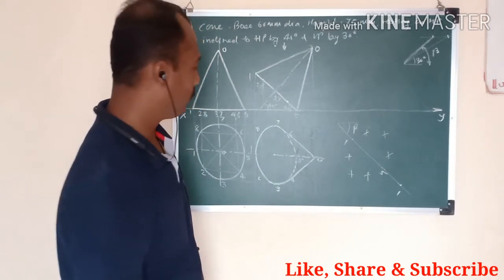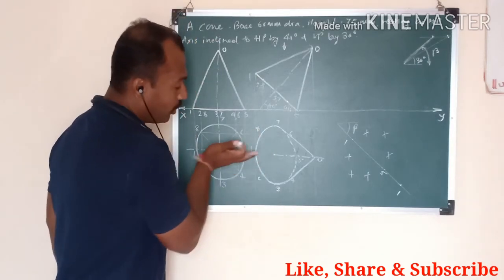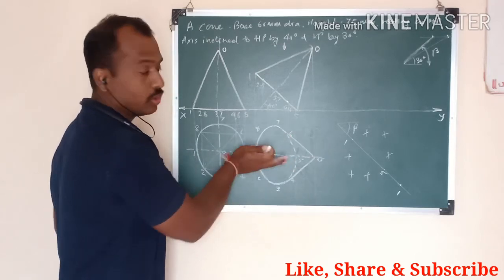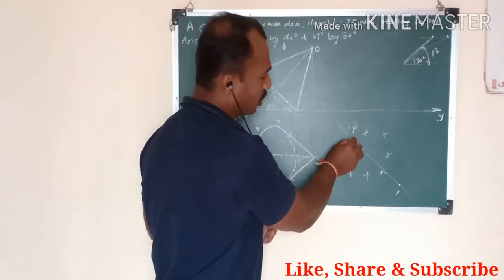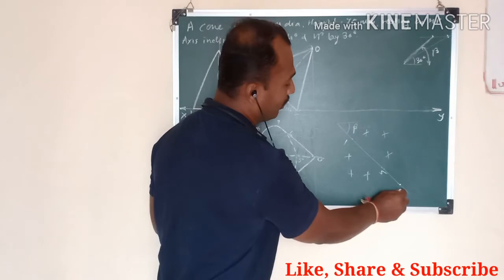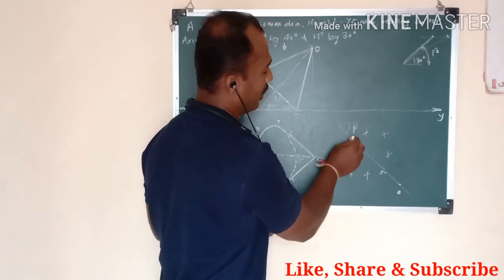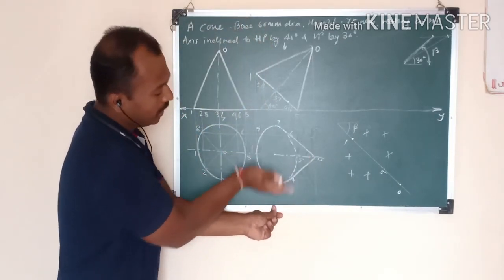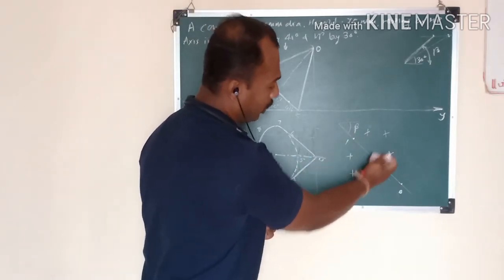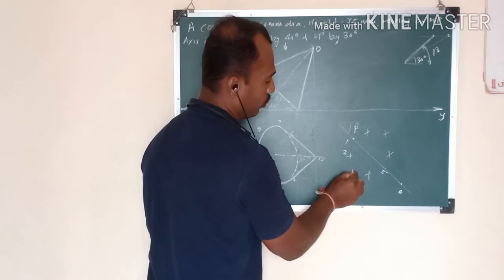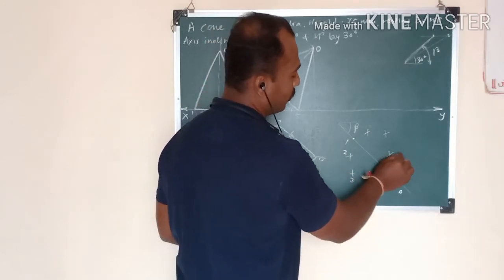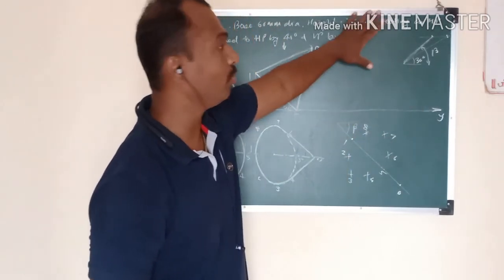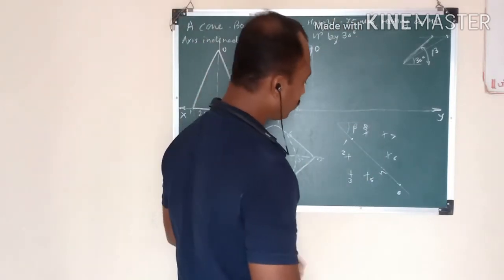Now assign point names carefully. Looking from point 1 towards O, point 2 is on the right side. Consider that we are standing at point 1 looking towards O — assign: 1, 2, 3, 4, 5, 6, 7, 8. This point naming is very important; if you put the wrong point name the answer will be wrong.